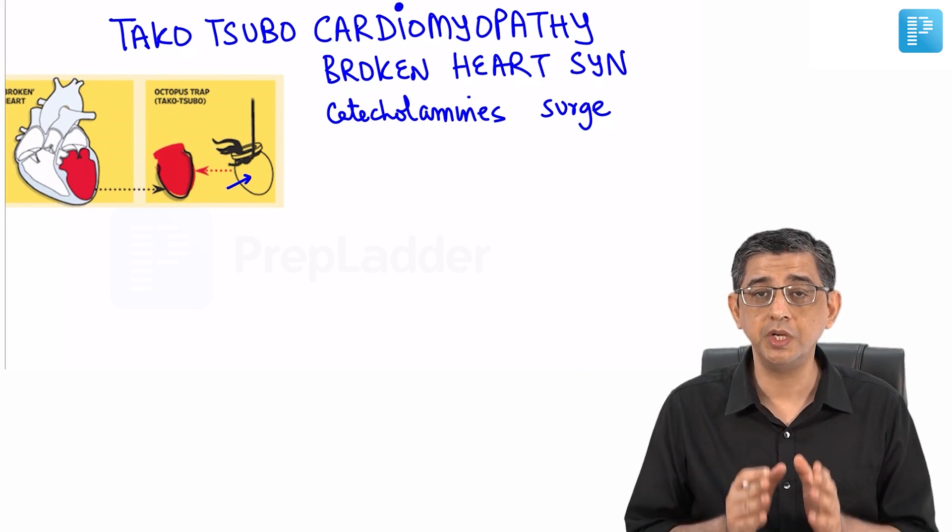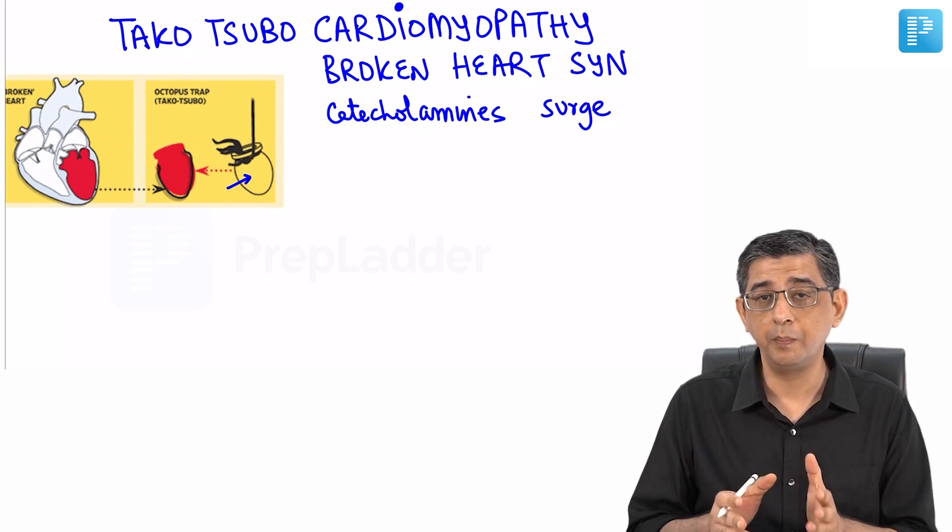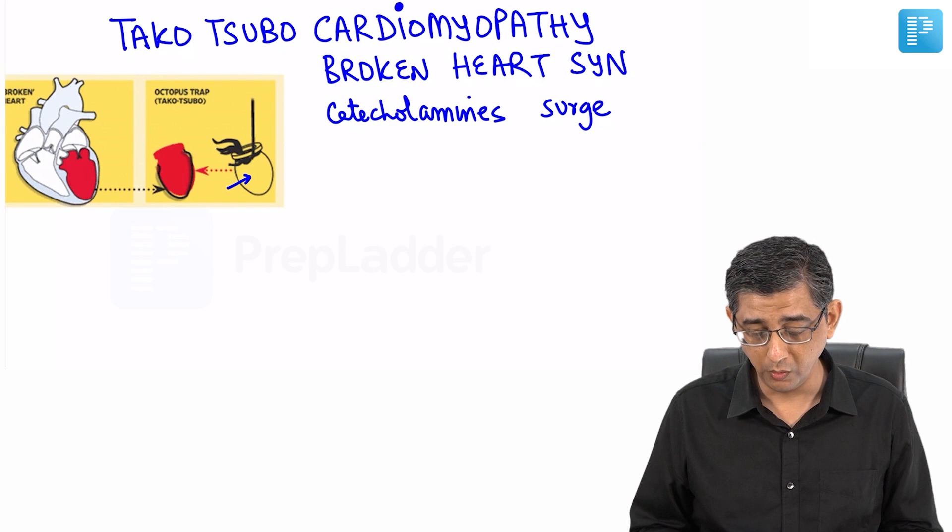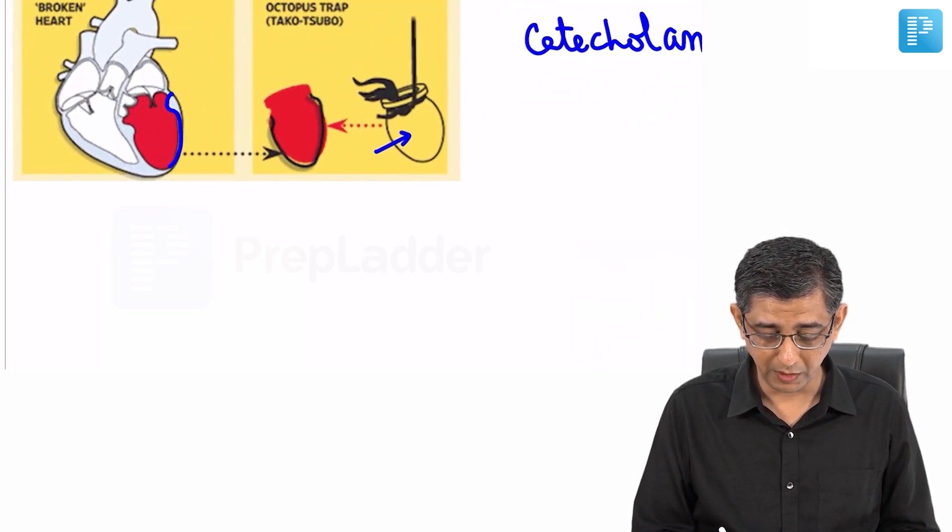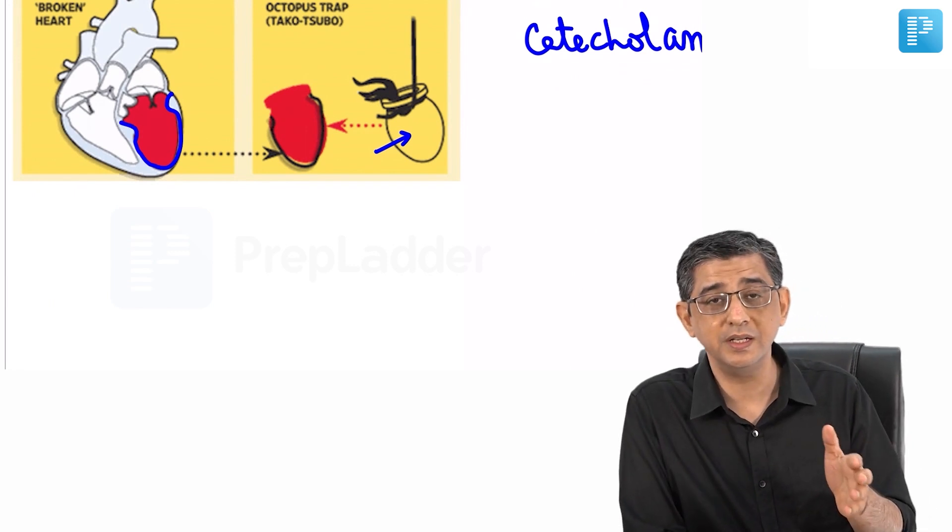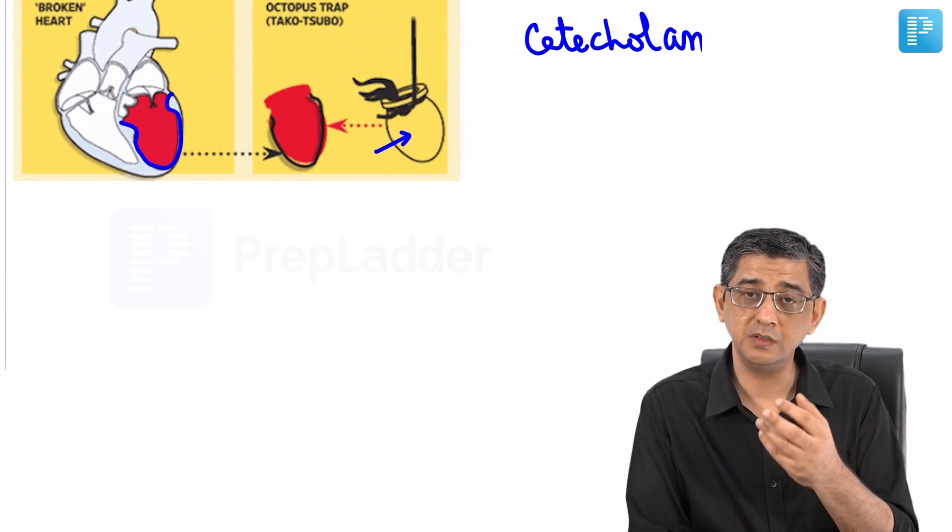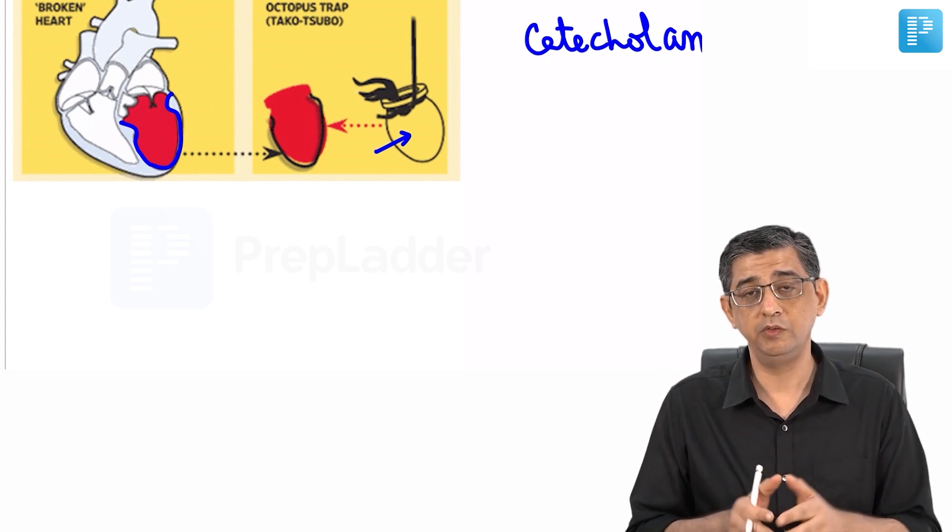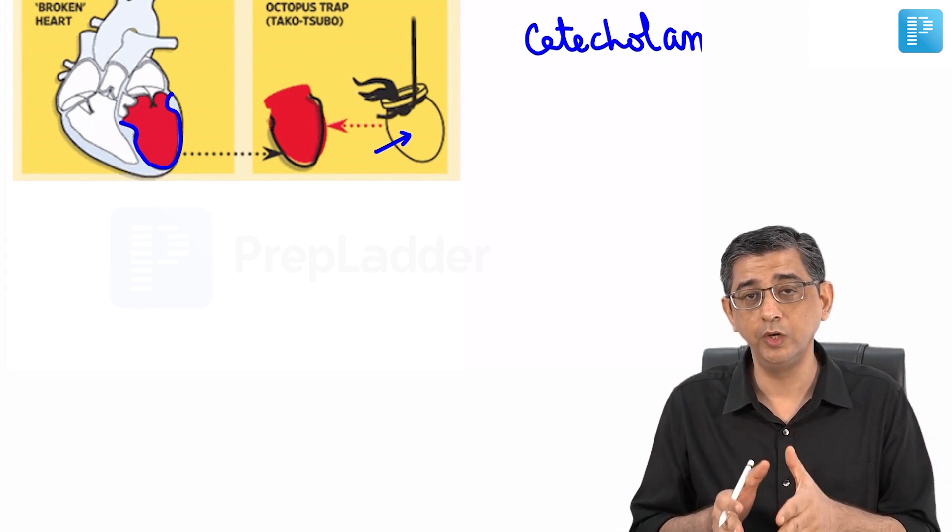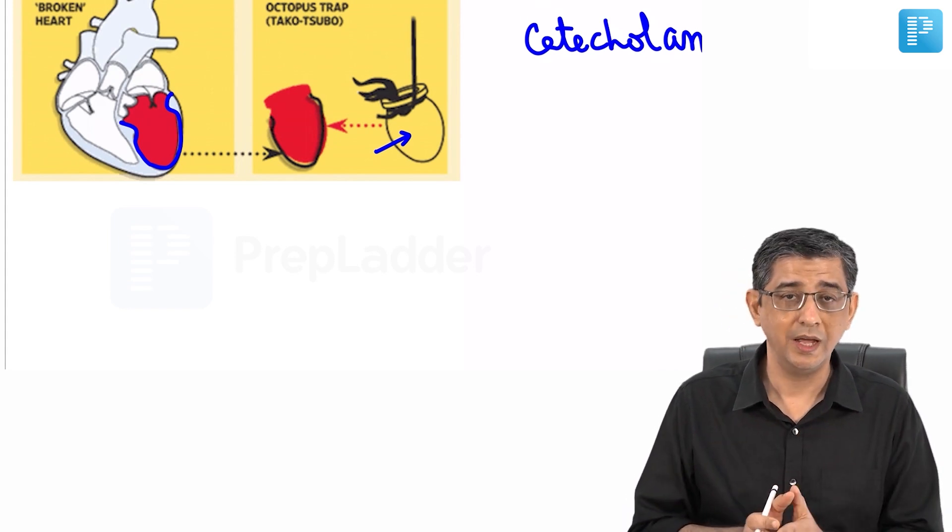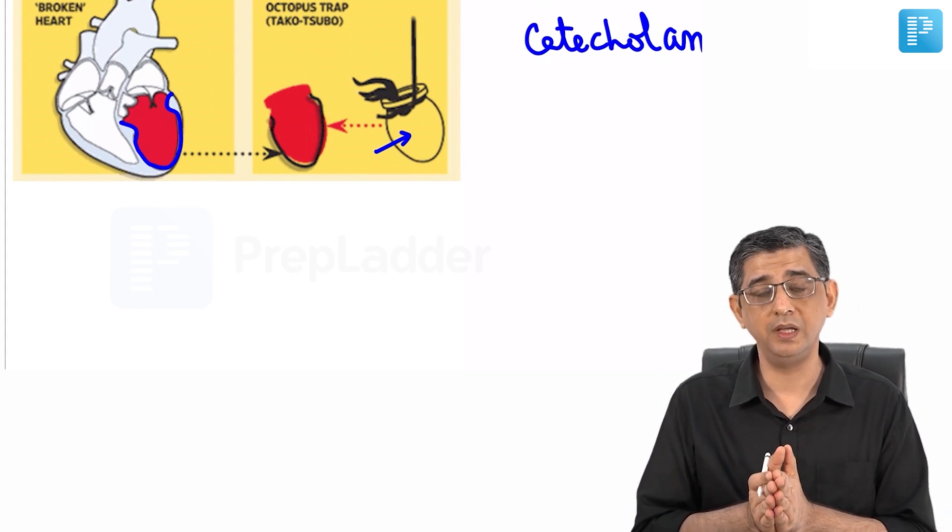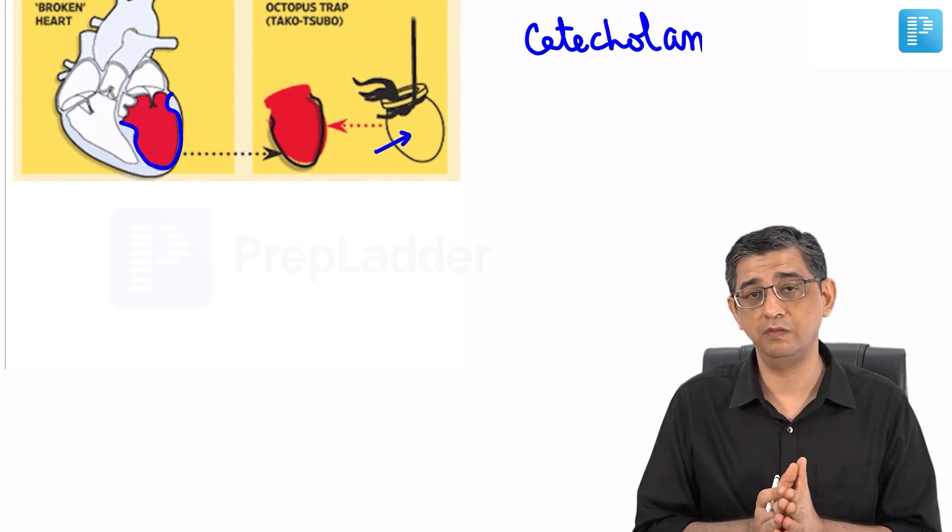It will cause a change in the shape of the left ventricle, especially the apical part of the heart might balloon out. The shape of the left ventricle is responsible for the effective hemodynamics. If there is going to be a catecholamine induced damage to the myocardium, then the effective hemodynamics are lost and the heart is not able to pump properly, therefore there is cardiogenic shock developing in the patient.